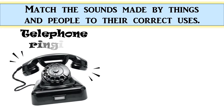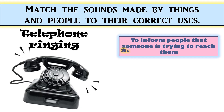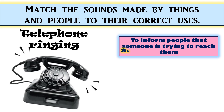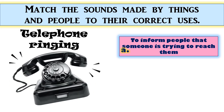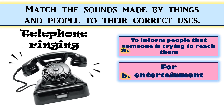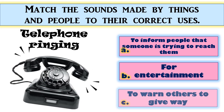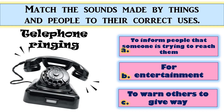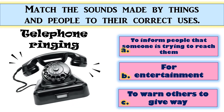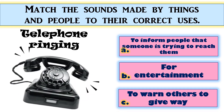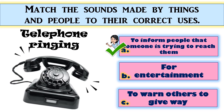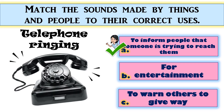Telephone ringing. A. To inform people that someone is trying to reach them. B. For entertainment. C. To warn others to give way. The correct answer is A. To inform people that someone is trying to reach them. Good job!